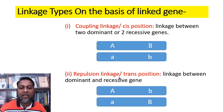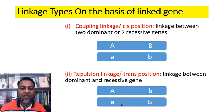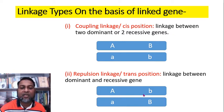The next type is repulsion linkage or transposition. In this case, linkage is found between a dominant and a recessive gene. In this figure, we see capital A and small b are linked in one chromosome, and small a and capital B are linked genes in the other chromosome. When a dominant gene is linked with a recessive gene, it is known as repulsion linkage or transposition.